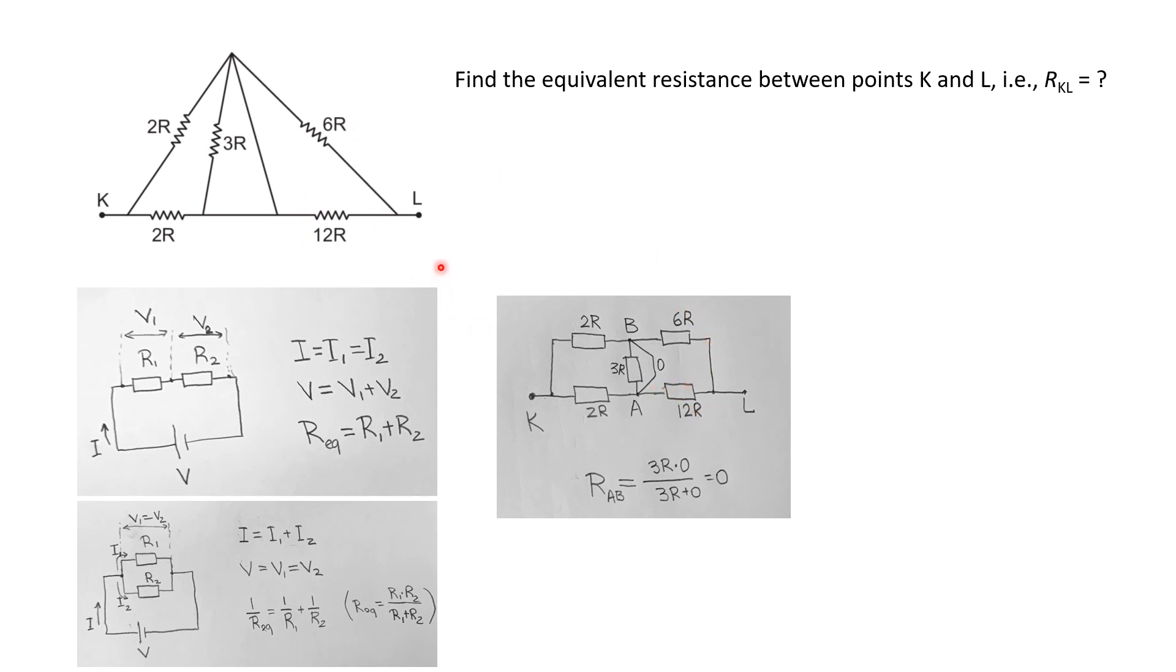What is the equivalent resistance between point A and B? Using the parallel equation, it's 3R × 0 / (3R + 0) = 0. In other words, you can represent your circuit this way because this is effectively zero.